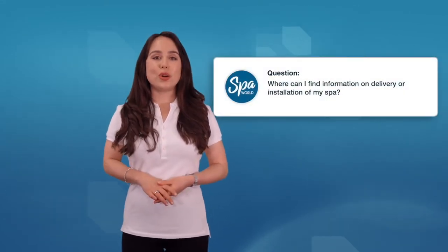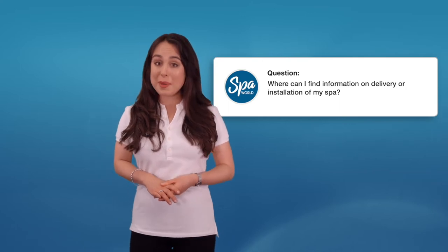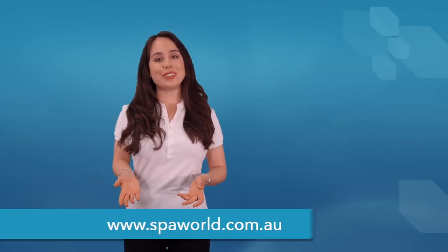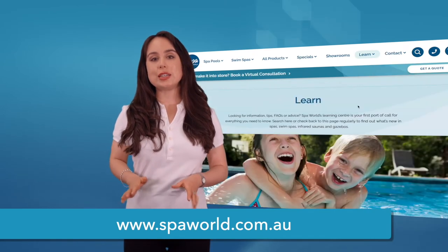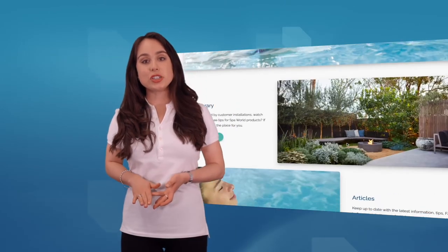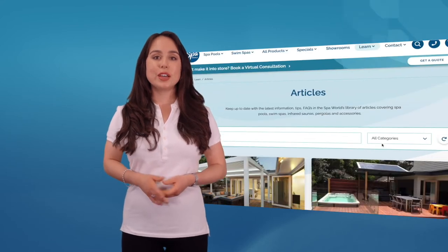Where can I find information on delivery or installation of my spa? The best place to go for this is the Spa World website. You can find all the information you need about pre-delivery and installation ideas just through our Learning Centre. It's also important to note that when you make a spa or swim spa purchase, you will be assigned a Spa World concierge who will look after you and make regular contact from the moment you make your purchase through until after the delivery.